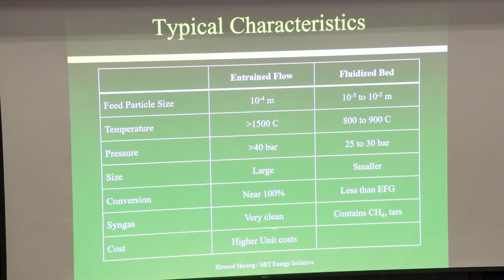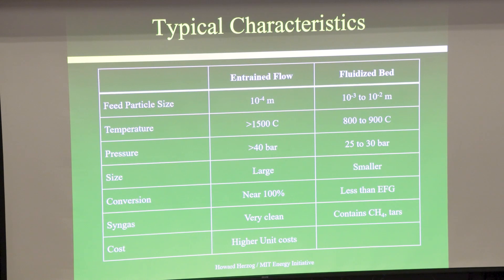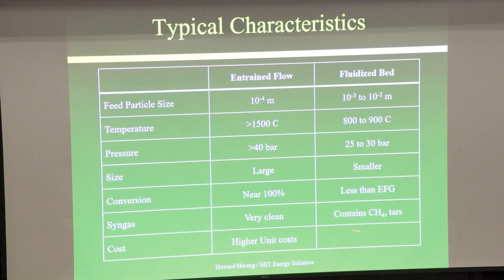With entrained flow, when you gasify, you have nearly 100% conversion — high temperature really helps that. With fluidized beds, you don't have 100% conversion. The syngas from entrained flow is very clean, whereas from a fluidized bed it contains methane and things called tars — aromatics and other hydrocarbons. So if you're going to do the Fischer-Tropsch process, you'll have to clean up the tars first.